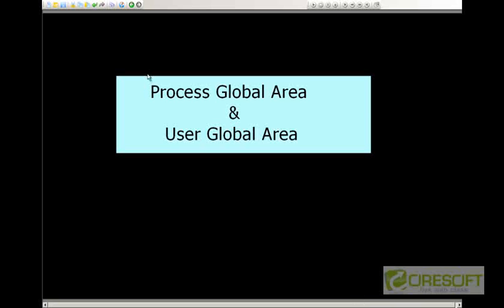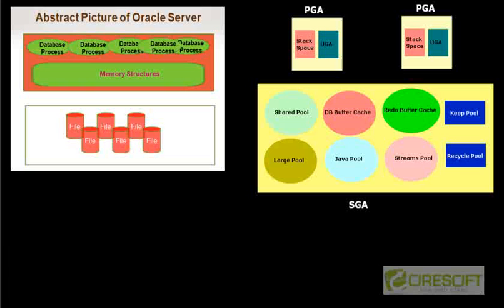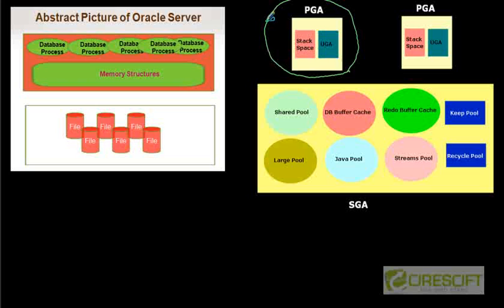Hello, welcome back to Oracle DBA tutorial. In this tutorial we are going to discuss about Process Global Area and User Global Area. This is the overview — we are currently discussing about memory structure, and essentially we are going to discuss about the content of the PGA, including what different things PGA consists of and how to manage PGA.